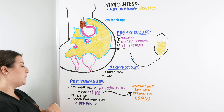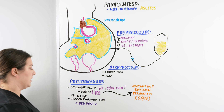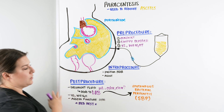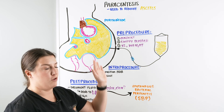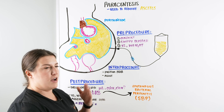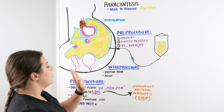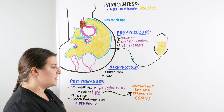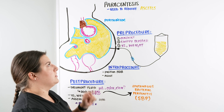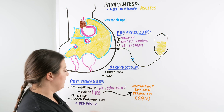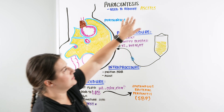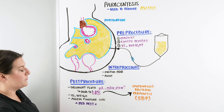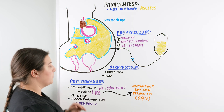Once the fluids are sent off, we weigh our patient again and get their vital signs, because we just removed fluid and the body has a response to that. The patient could become hypotensive, dizzy, nauseous, or not feel well. We assess vital signs — are they looking hypotensive? Something we typically give after a paracentesis is albumin, because the patient already has liver dysfunction. We may give an additional dose of albumin to help with fluid balance.